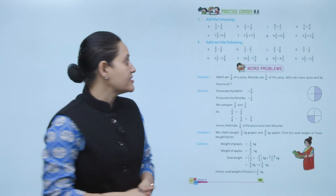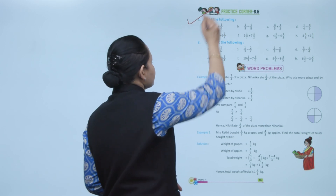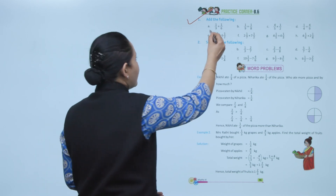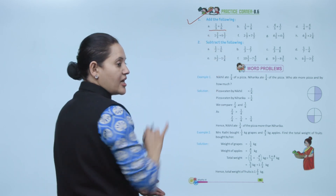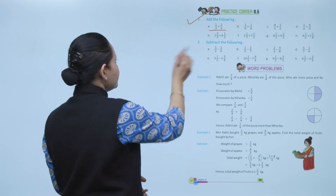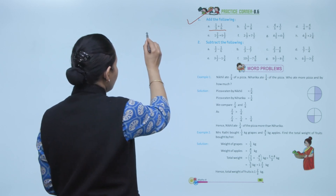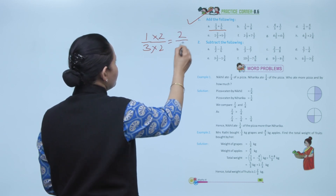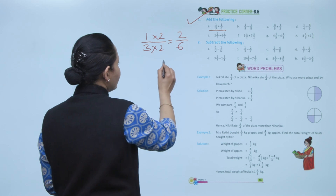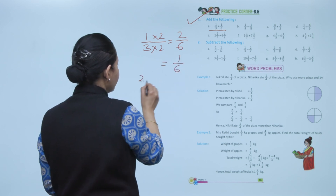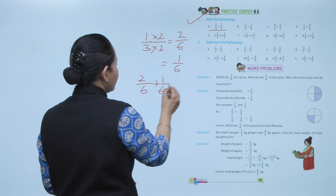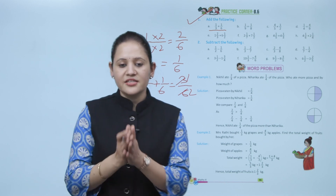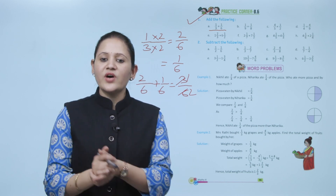Practice corner 8.6: add 1 by 3 plus 1 by 6. They are unlike fractions, so convert using LCM of 6. 1 by 3 becomes 2 by 6. Now add 2 by 6 plus 1 by 6 equals 3 by 6, which simplifies to 1 by 2. Practice all the questions here.